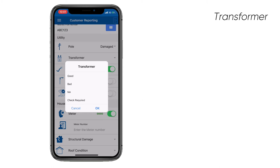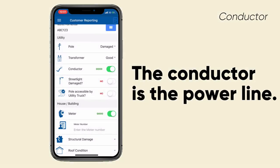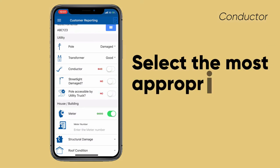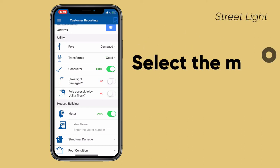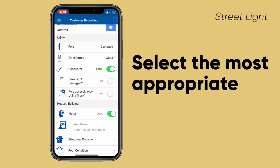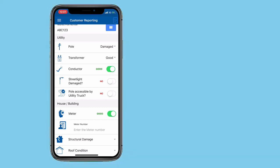For the transformer, the options are: good, bad, not applicable, and check required. In this case I'll say the transformer is good. The conductor is simply the power line — you would select whether it is good or bad. If it's broken or down, it would be bad. For this demonstration, the conductor is good. For the street light, I'm going to leave it as 'no' — it is not good.